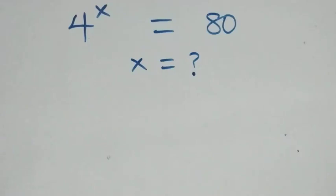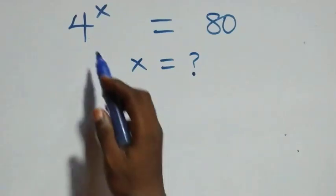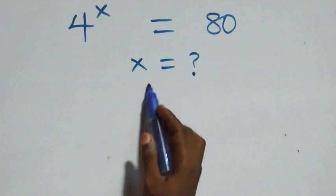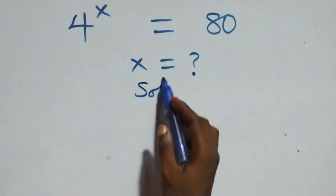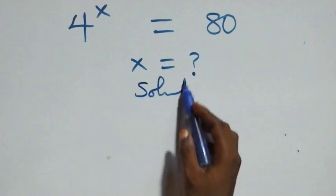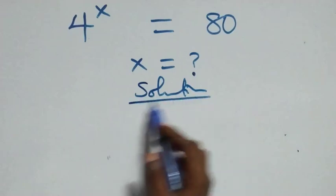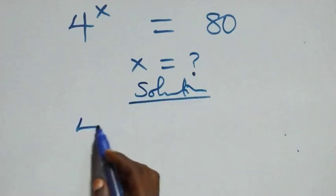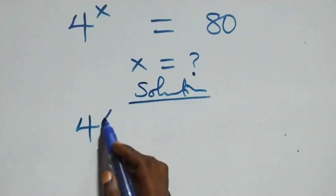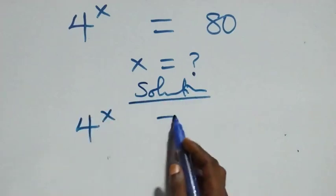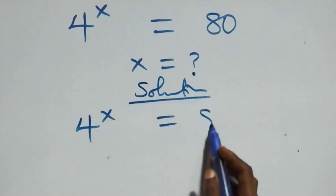Hello, you are welcome. Here we solve this exponential equation. What we have is four raised to the power x equals eighty.